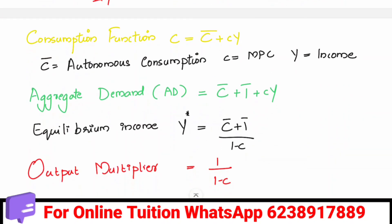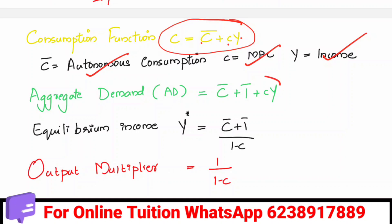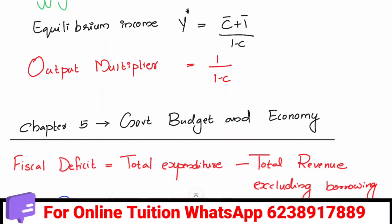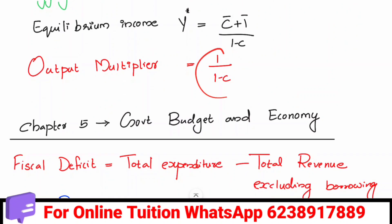The consumption function is C = C̄ + cY, where C̄ is autonomous consumption, c is MPC, and Y is income. Aggregate demand is C̄ + Ī + cY. Equilibrium output is (C̄ + Ī) divided by (1 − c). The output multiplier is 1 / (1 − c).